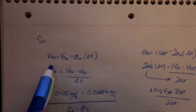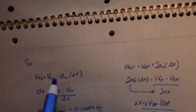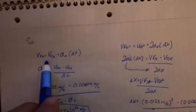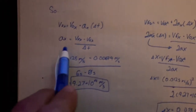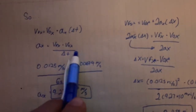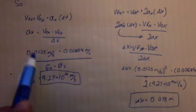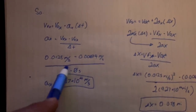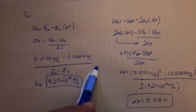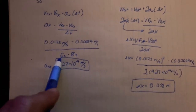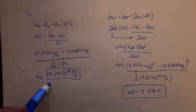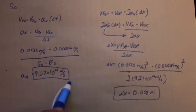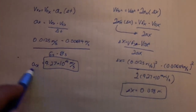First we're going to solve using this equation: final velocity equals initial velocity plus acceleration times the change in time. We don't know the acceleration, so we rearrange to solve for ax: ax equals final velocity minus initial velocity over the change in time. We plug in 0.0125 miles per second minus 0.00694 miles per second, divided by the change in time — final time is 6 seconds minus 0 seconds, giving 6. Working this out, we get ax equals 9.27 times 10 to the negative 4 miles per second squared. We now know ax; that is no longer an unknown.